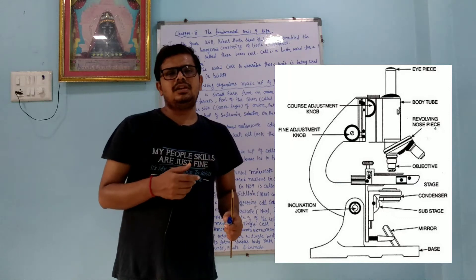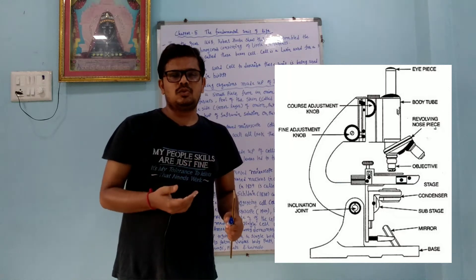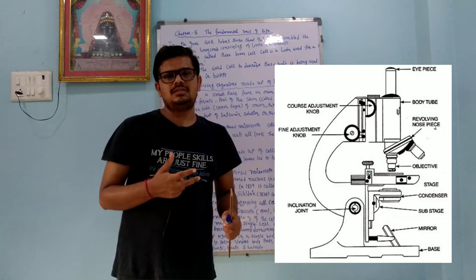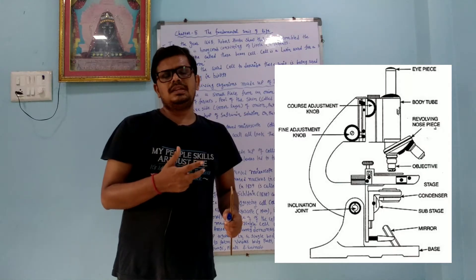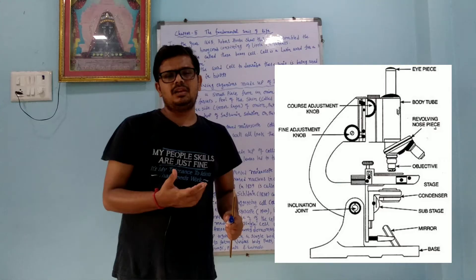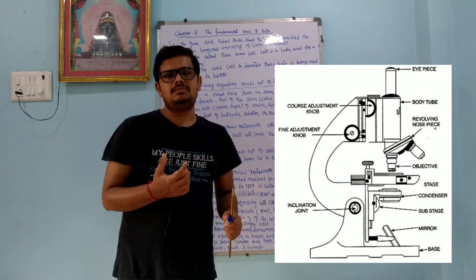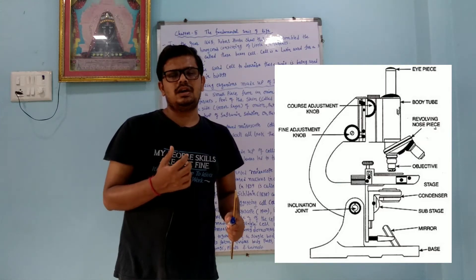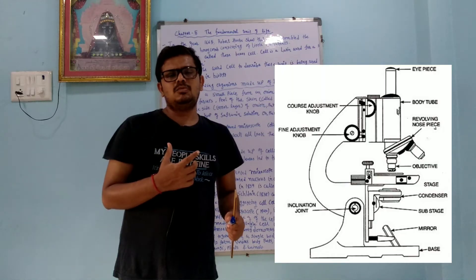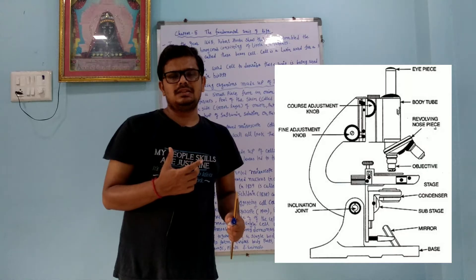After that, the compound microscope came into existence. In a compound microscope, two lenses are present. One is called the objective lens, which is towards the object kept on the slide. The other is the eyepiece lens, which is towards the eye. Both the objective lens and the eyepiece lens are made up of convex lenses.